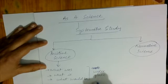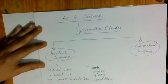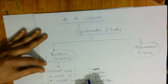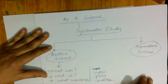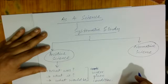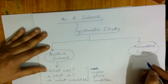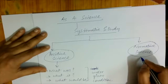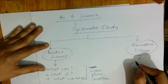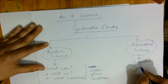Under given conditions — if conditions remain the same, what was, what is, and what will be? This is called Positive Science. If any subject is telling us what was, what is, and what will be under given conditions, it is called Positive Science. Normative Science, on the other hand, is suggestive in nature.